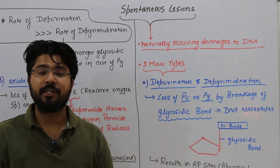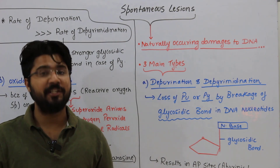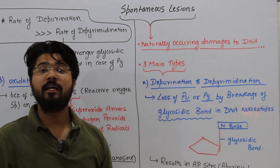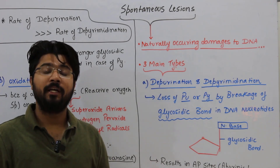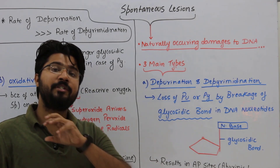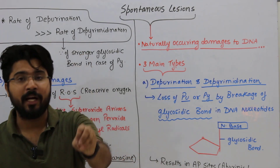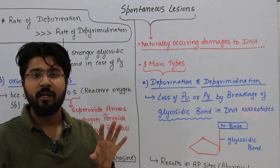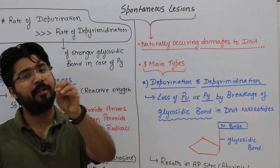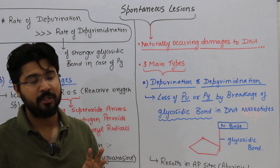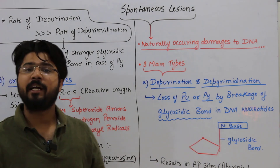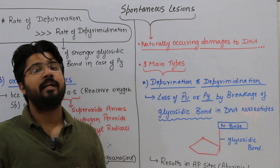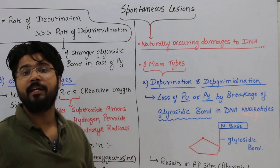Spontaneous lesions are naturally occurring damages to DNA. By 'naturally occurring' we mean the DNA or the cell of the organism is not exposed to any mutagen — whatever is happening is happening naturally within the cell boundaries. There are three main types of spontaneous lesions.